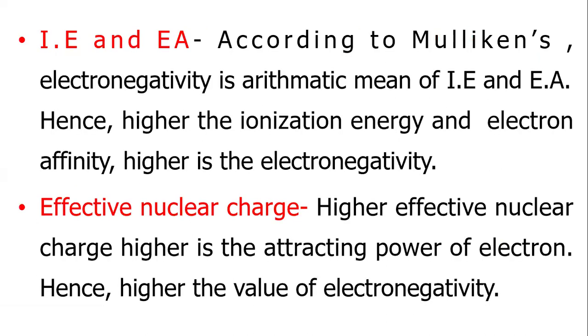Ionization energy and electron affinity. According to Mulliken's, electronegativity is the arithmetic mean of ionization energy and electron affinity. Hence, higher the ionization energy and electron affinity, higher is the electronegativity.